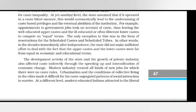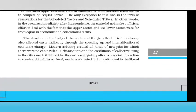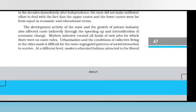In post-independence India, the state inherited these contradictions. On the one hand, the state was committed to the abolition of caste and explicitly wrote this into the constitution. On the other hand, the state was both unable and unwilling to push through radical reforms that would have undermined the economic basis of caste inequality. The state assumed that if it operated in a caste-blind manner, this would automatically lead to undermining caste-based privileges. For example, appointments to government jobs took no account of caste, leaving well-educated upper castes and often illiterate lower castes to compete on equal terms, with the only exception being reservations for scheduled castes and tribes.